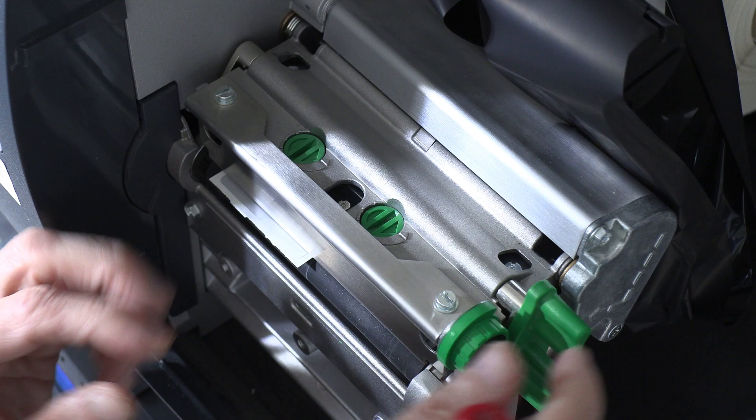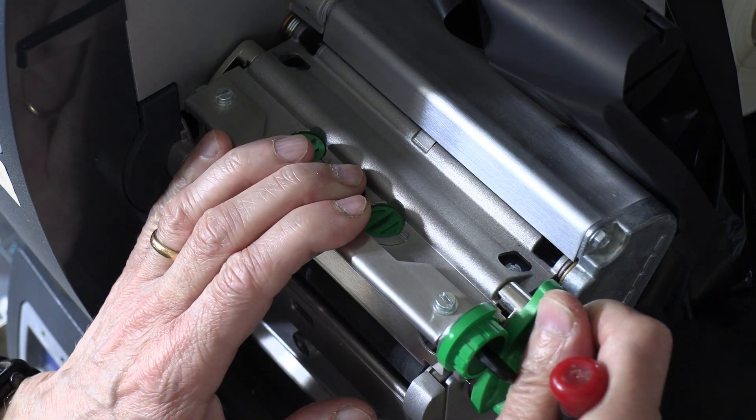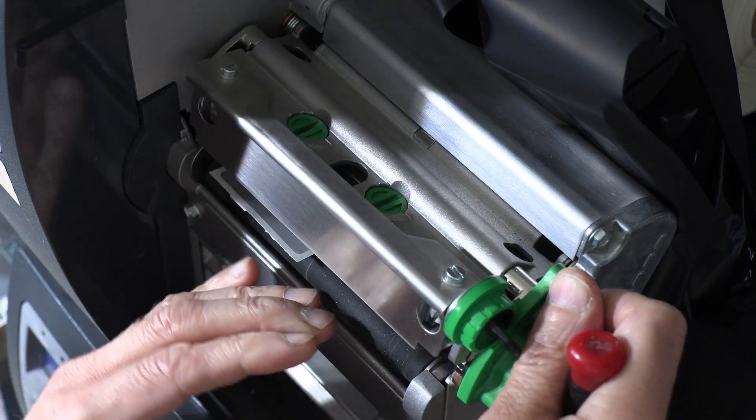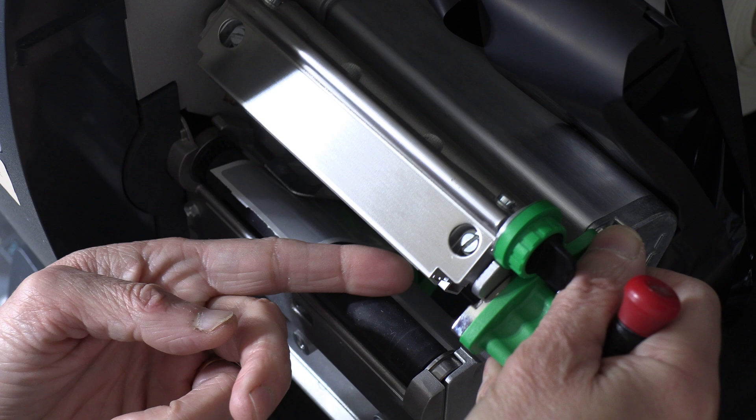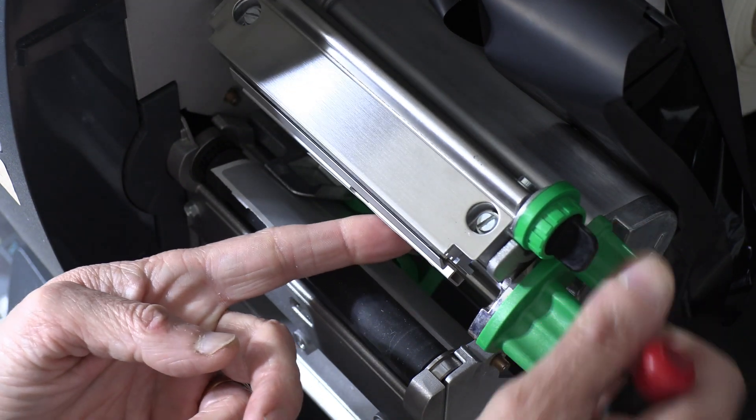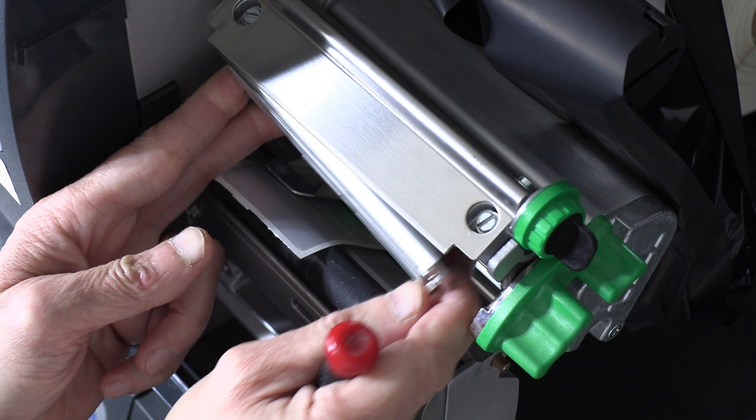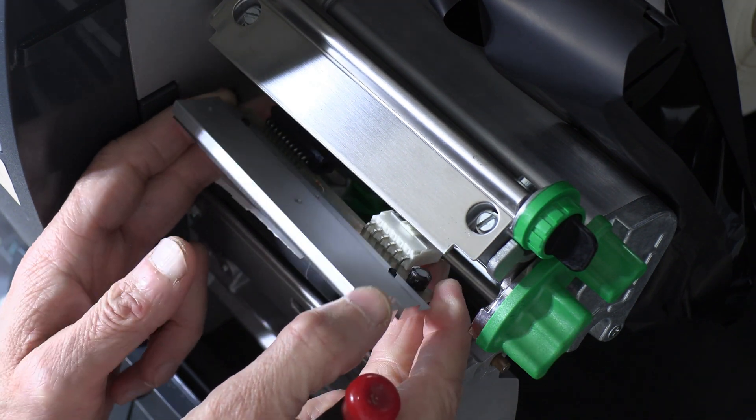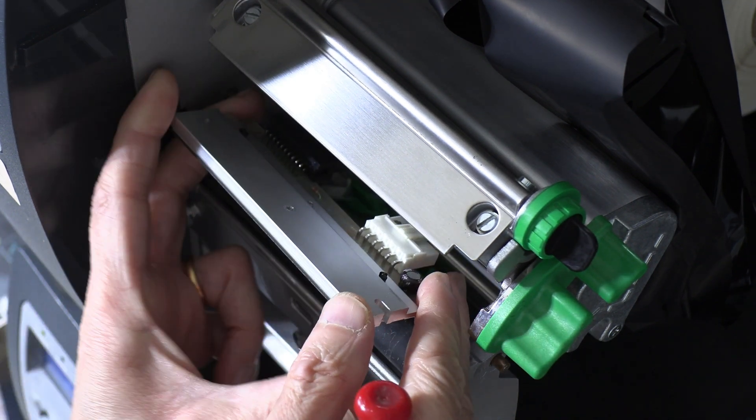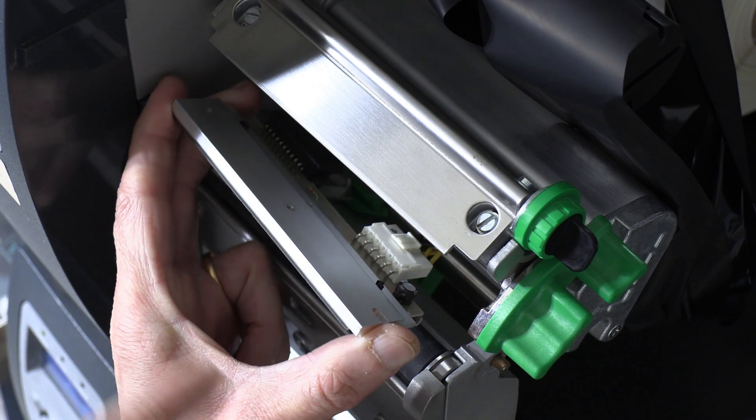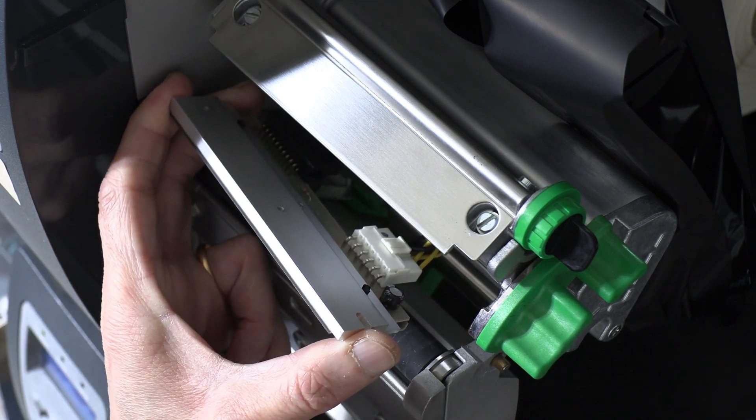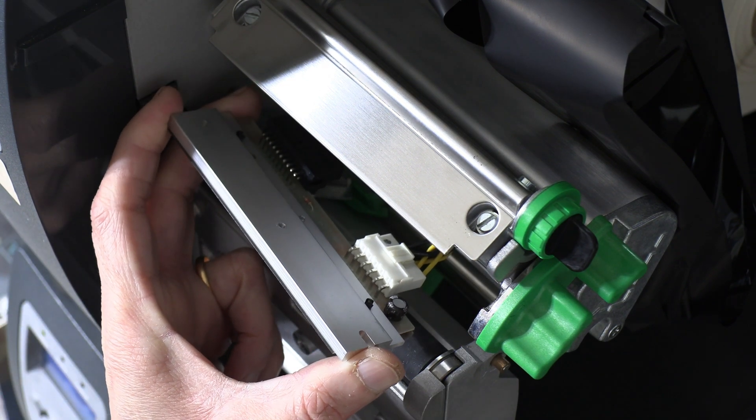After we open this, we slightly lift this and the head is ready to come out. The printhead is ready to come out. Very carefully remove the printhead because you don't want to break it. Once you remove the printhead, make sure not to bang anything in this section because that's where the sensors are. The printhead actually touches the paper there.